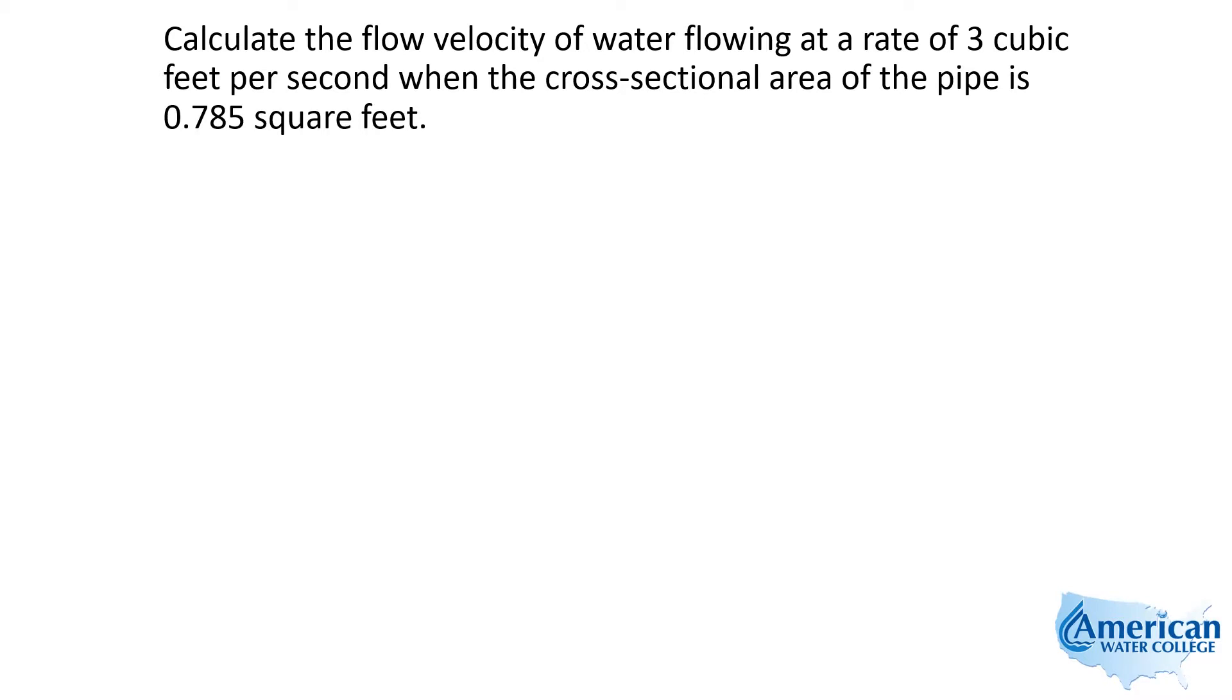This first problem reads: Calculate the flow velocity of water flowing at a rate of 3 cubic feet per second when the cross-sectional area of the pipe is 0.785 square feet.